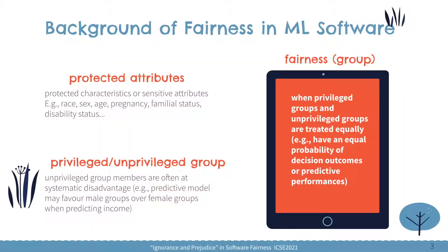Let's look at some background on fairness in machine learning software. There is this concept called protected attributes, which means the features of people that we may have prejudice towards, such as people with different races, genders, ages, and so on. Based on this, the data could be classified into privileged and unprivileged groups, where the unprivileged group members are often at a disadvantage. For example, when we try to predict income, the male group is often the privileged group, but the female group is often the unprivileged group.